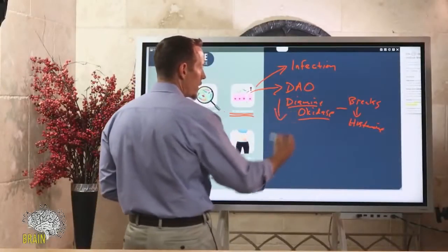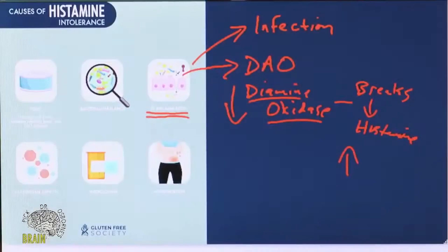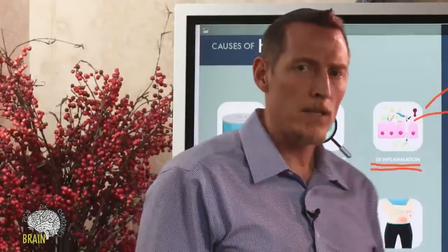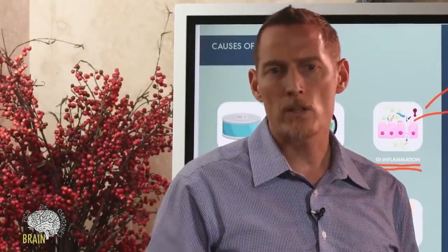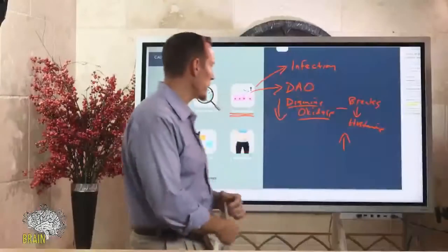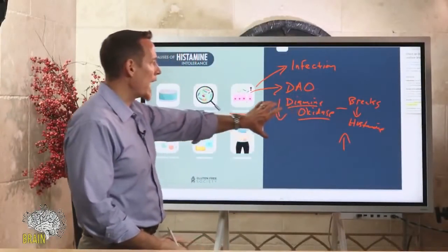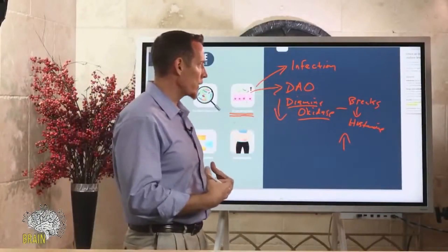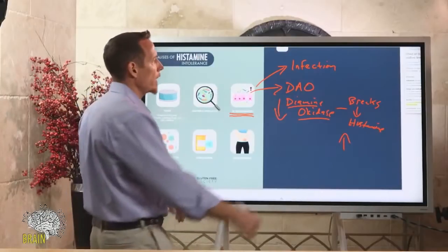When DAO is down, histamine breakdown is not happening, so histamine levels build up. We eat foods that contain histamine, and we're also exposed to chemical agents that cause us to release histamine. The most power of this enzyme is in the gut, so any time we have inflammation in the gut, we run into problems.